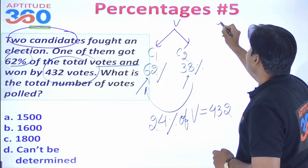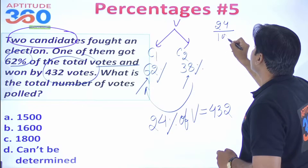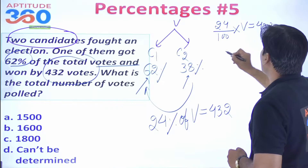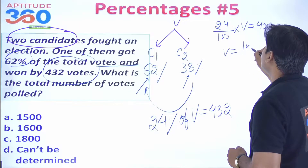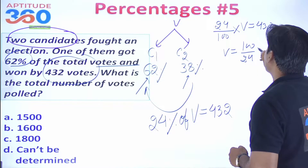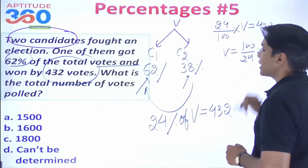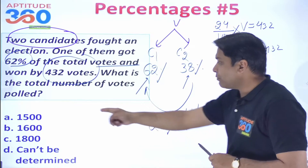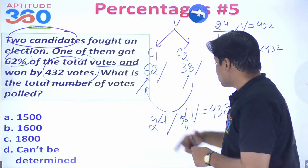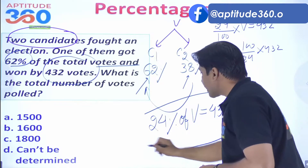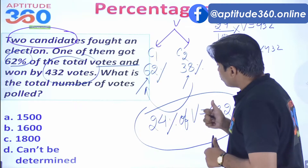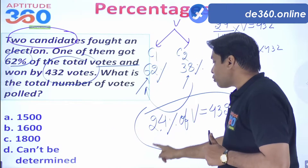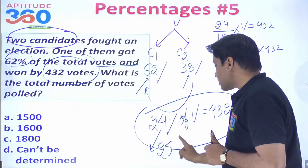This margin of 24% equals 432 votes. So: (24/100) × total votes = 432. Total votes = (100/24) × 432. Now rather than solving this fully, notice that 24% is very close to 25%, which is one-fourth.